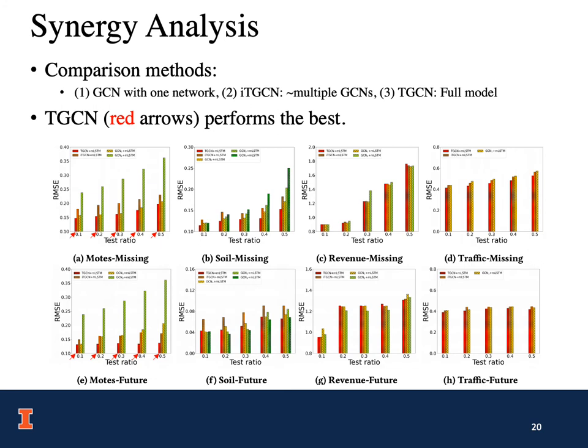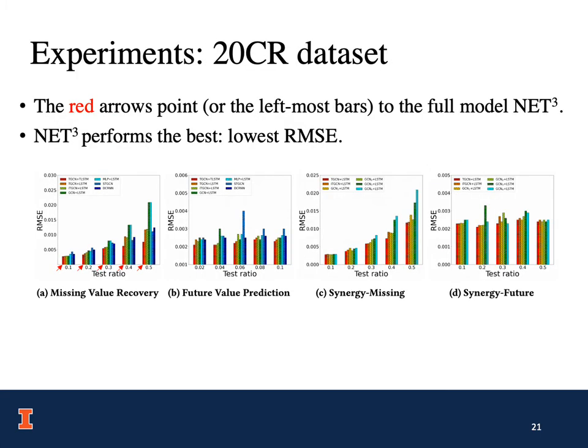This slide shows the experimental results for the synergy analysis. We compare three methods: the first is GCN with only one network; the second is ITGCN, the independent version of TGCN, which can be seen as multiple GCNs; and the third is TGCN, the full model. The experimental results show that in general, TGCN performs the best. This slide also shows results for the 20-cellar dataset, where the red arrows point to the full model NetCubic, which performs best in general with the lowest RMSE.